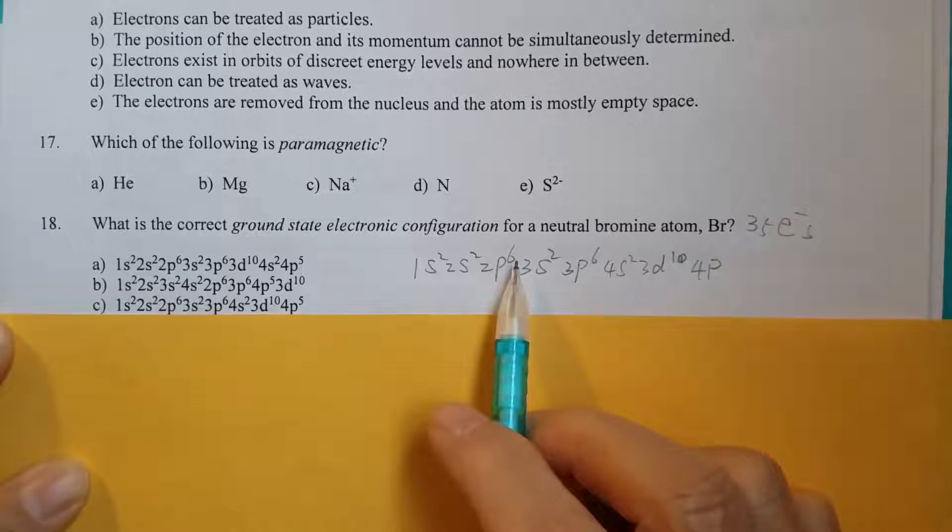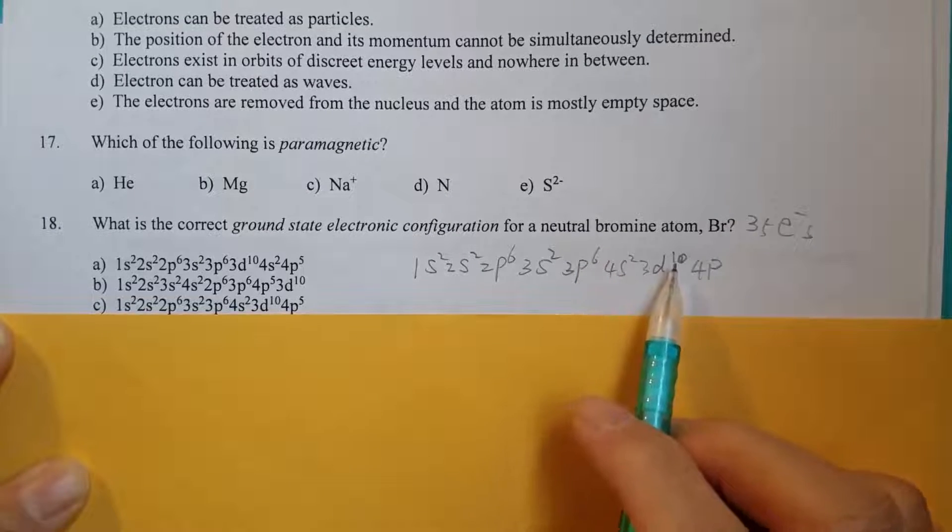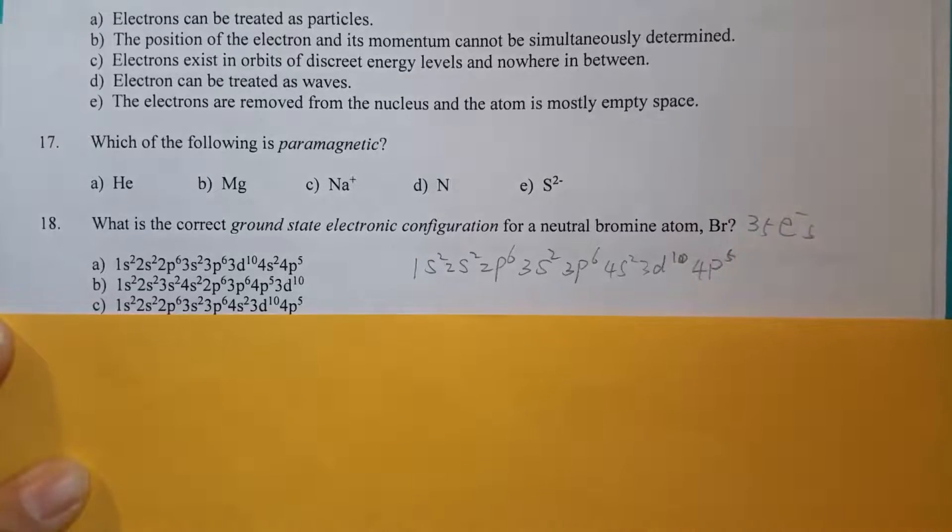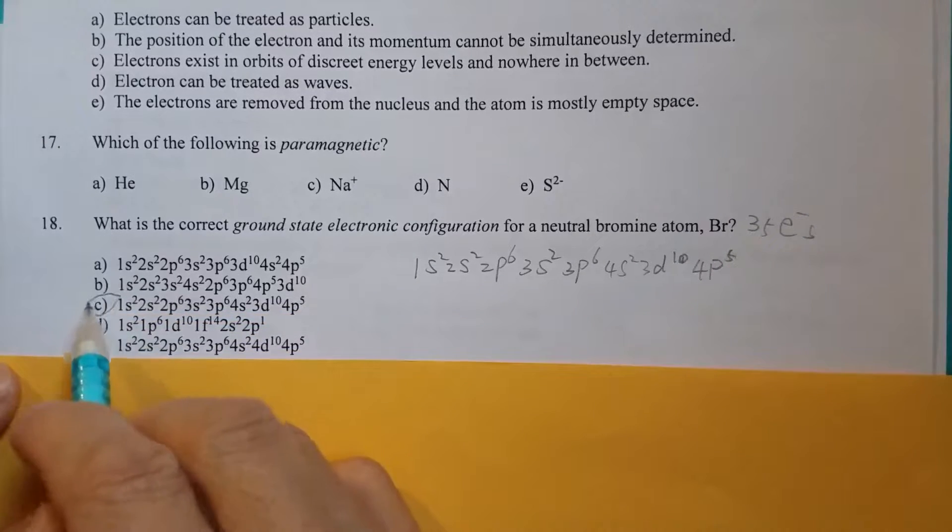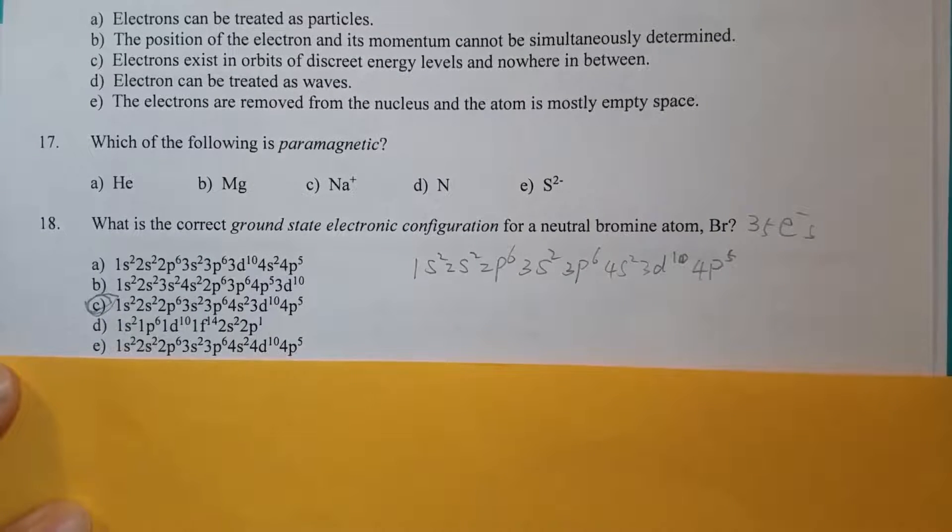So that's 10, 12, 18, that's 20, and that's 30. So therefore should be 4p5. And as you can see, that's choice C.